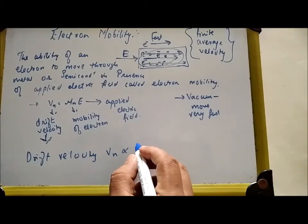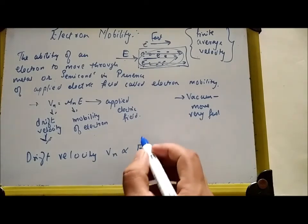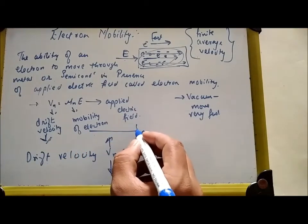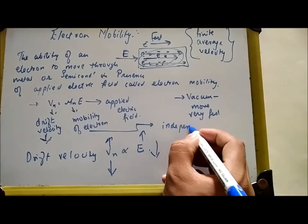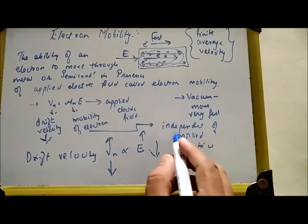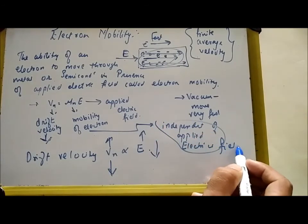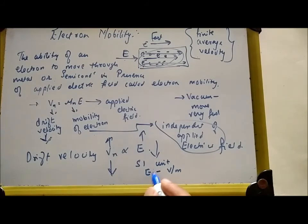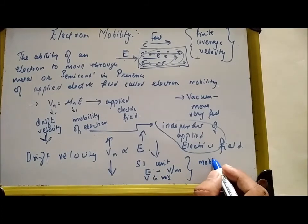Drift velocity is directly proportional to the electric field — when the electric field increases, drift velocity increases; when it decreases, drift velocity also decreases. However, the mobility of the electron is independent of the applied electric field. The SI unit of electric field is volt per meter and the SI unit of velocity is meter per second, so the unit of mobility is meter squared per volt-second (m²/V·s).